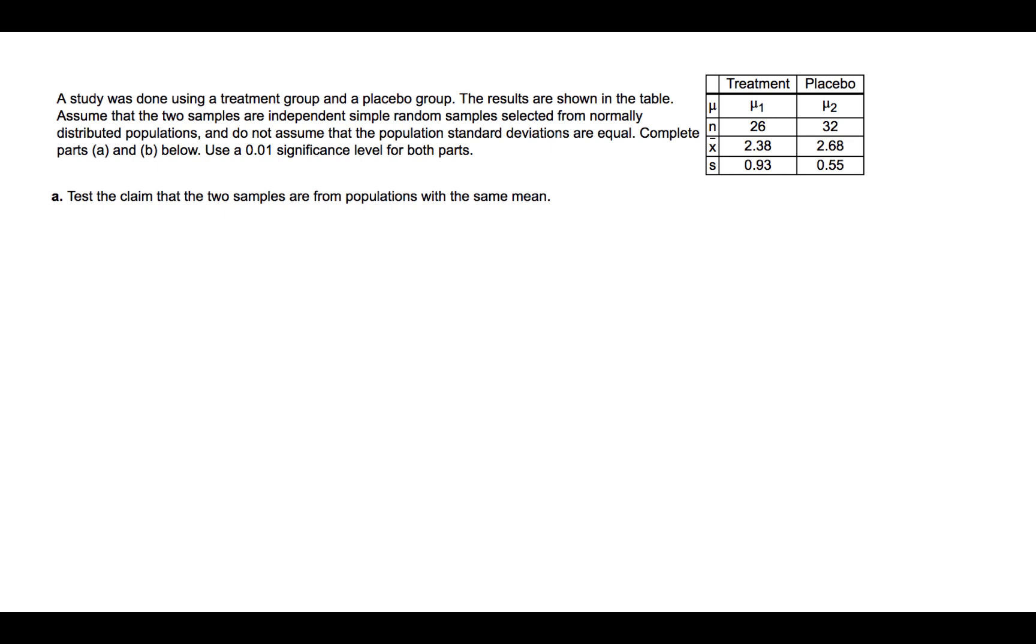The first thing we would do is specify the hypotheses. Our null hypothesis would be that mu1 is equal to mu2, and our alternative hypothesis would be that they are not equal.